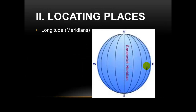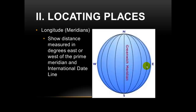Now we move on to lines of longitude, which are also called meridians. Lines of longitude show the distance measured in degrees east or west of the prime meridian. The prime meridian — if the equator is an imaginary line that goes across the Earth, the prime meridian is an imaginary line that goes up and down the Earth.